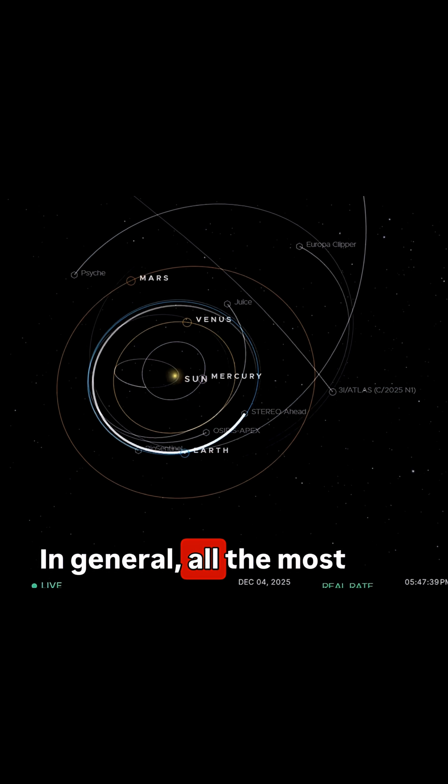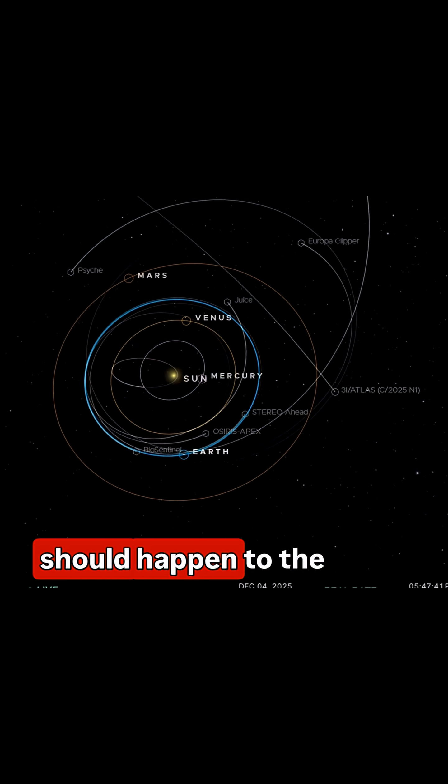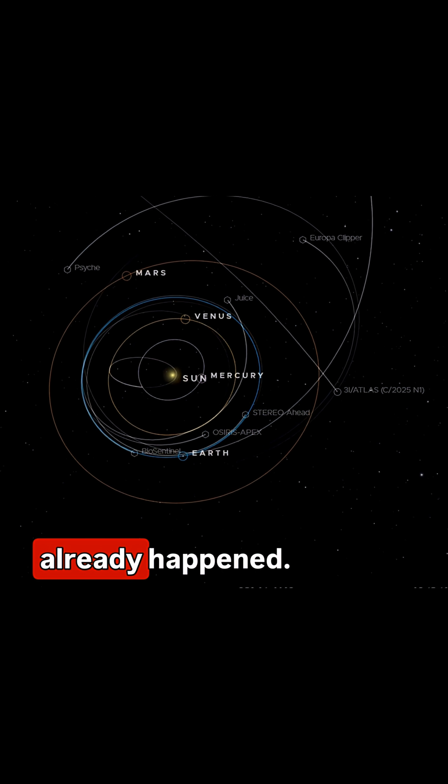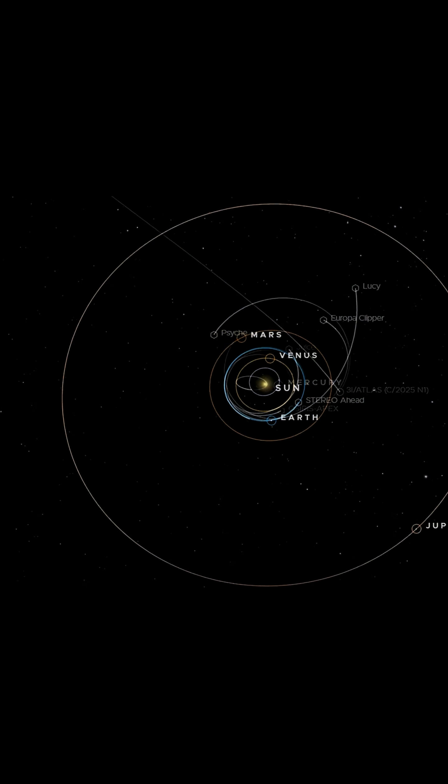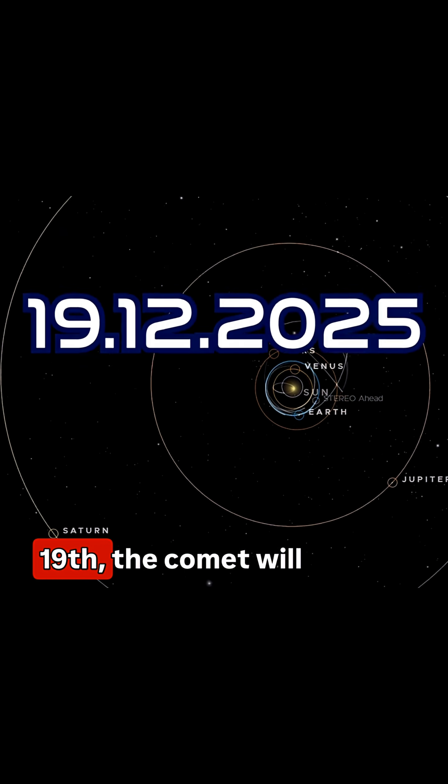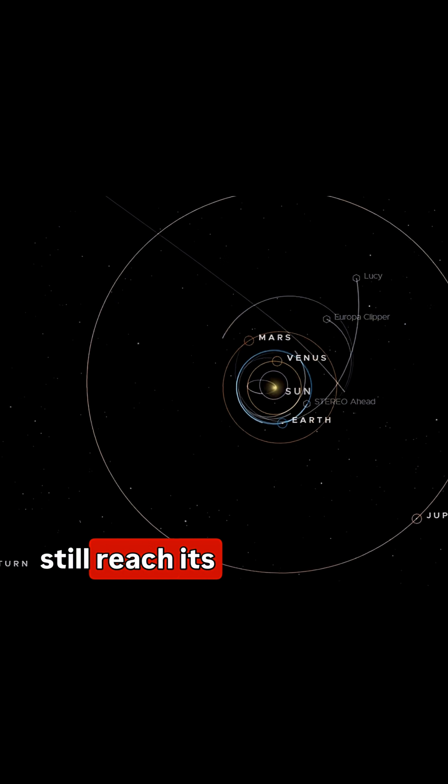In general, all the most important things that should happen to 3I Atlas already happened. However, on December 19th, the comet will still reach its culmination.